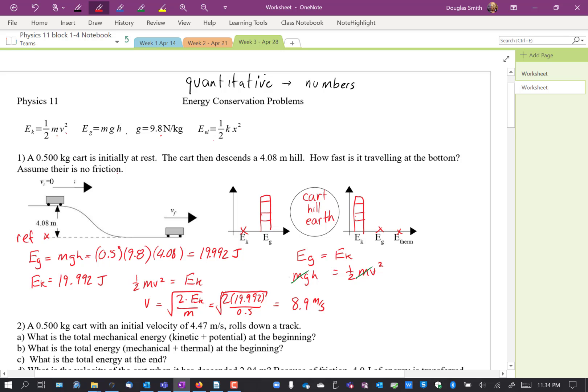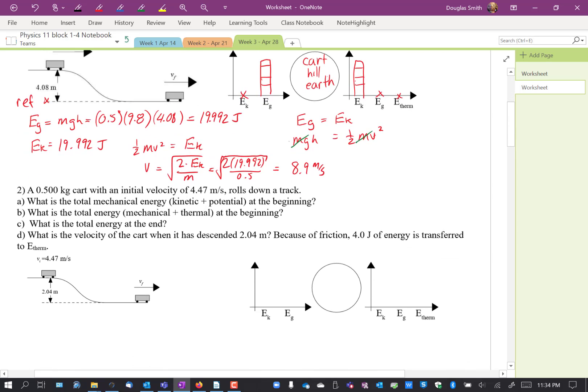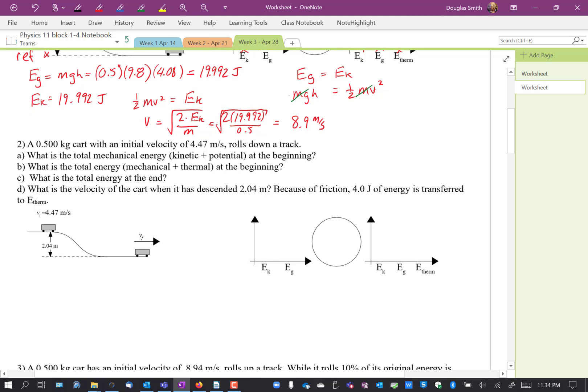Okay, so that's how to do that kind of question. Second question. Cart going down a hill. This time it has a starting velocity and we're asked a whole bunch of separate questions. And it looks like there's some friction. So we'll have to keep that in mind. Okay, so I'm going to put the cart, track, earth.